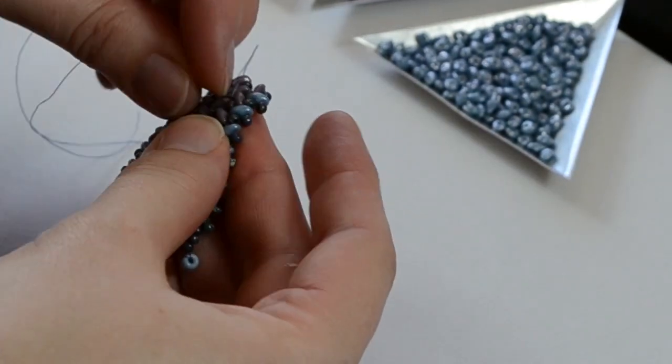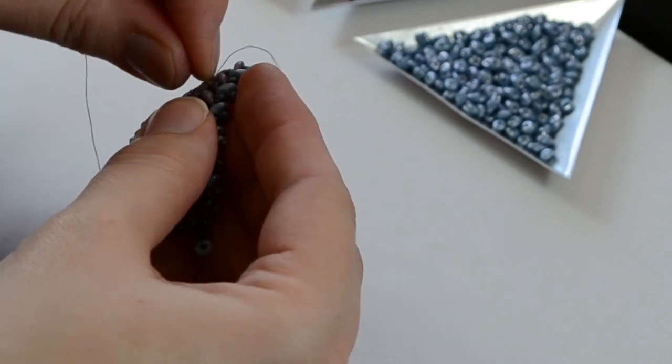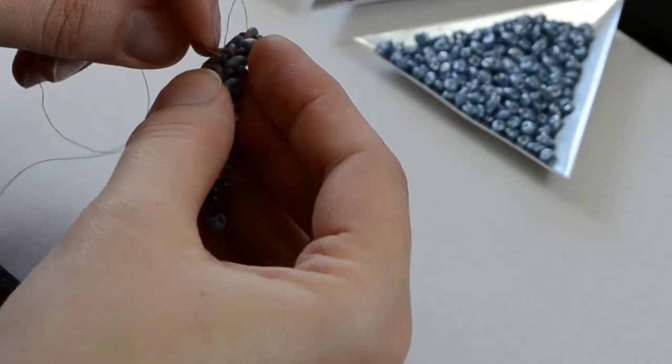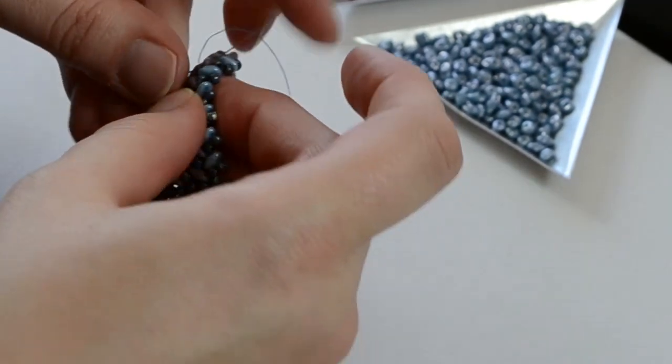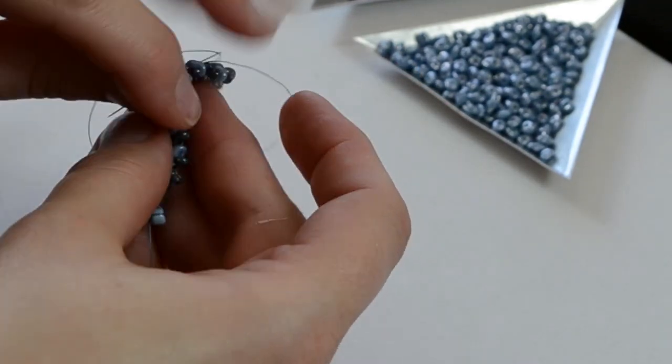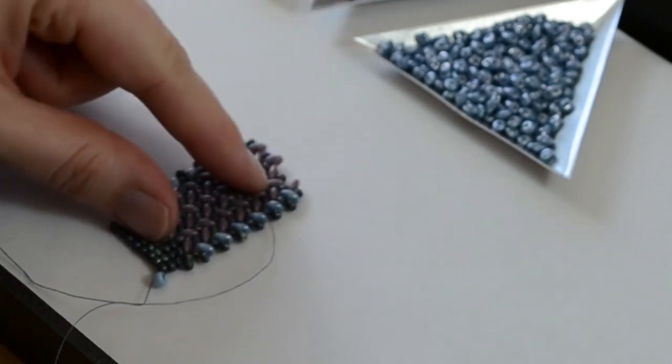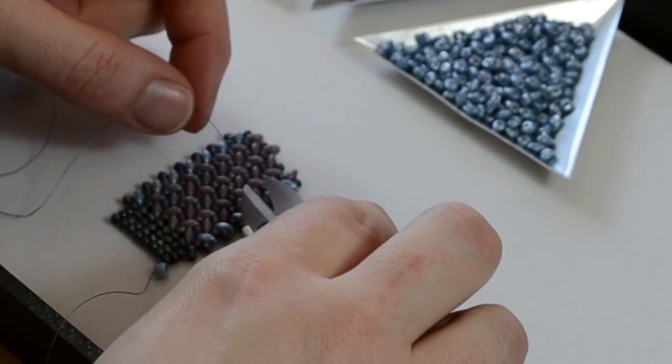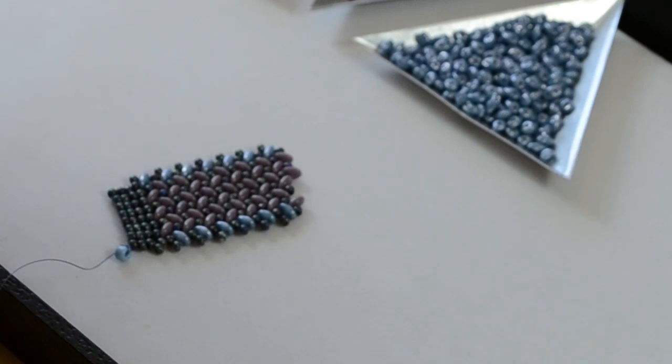Then feed this back through a couple more beads, and then snip it. That's in and secure. Trim it close to the beadwork, and then start with a new piece of thread.